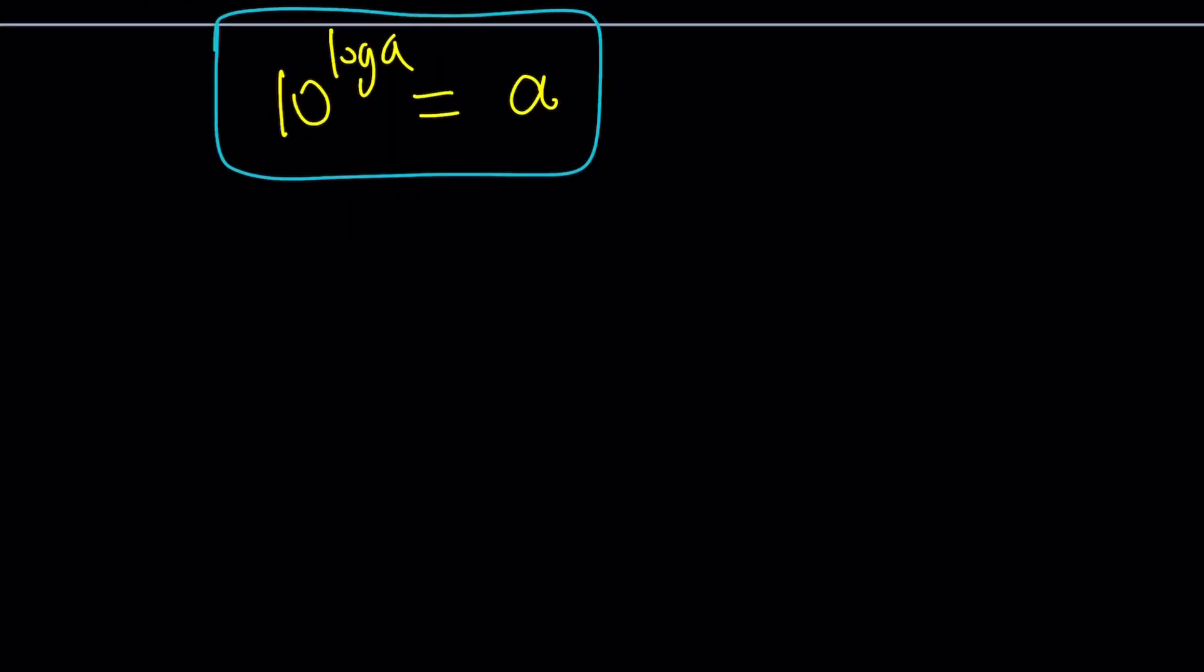So now we have x to the power log 3 plus x to the power log 5 equals 8. By the way, how many people noticed that 3 plus 5 is equal to 8? Does that help at all? Let's find out. How can I use this to my advantage? 10 to the power log something equals that thing.